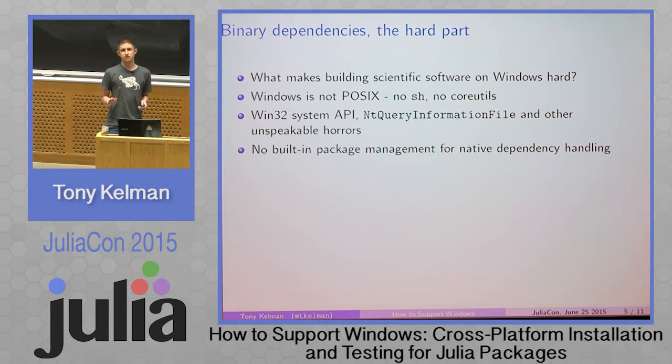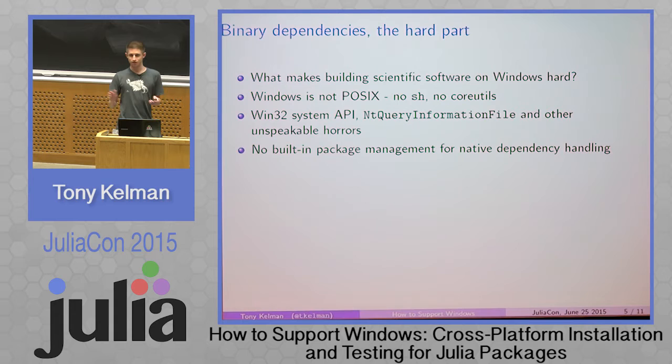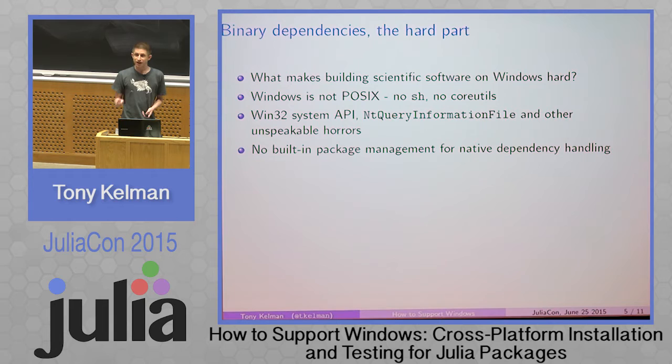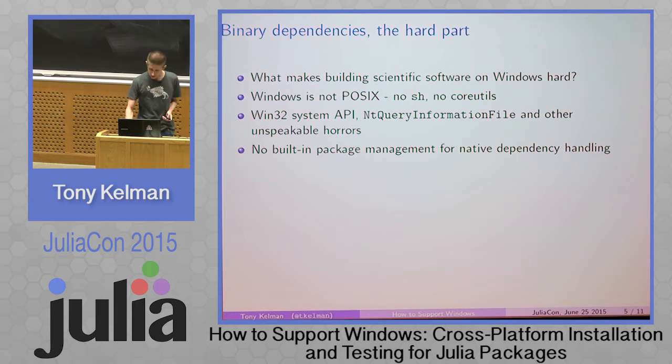Getting on to the hard part of binary dependencies: what makes building scientific software on Windows hard? It's hard. Windows is not POSIX. There's no POSIX shell, no core utilities like sed, grep, or awk — there are ports and POSIX compatibility layers, but they're not there by default; that's not part of the operating system. If you've ever used the Win32 API, it's not fun. Although it does probably have the best API documentation in the world — MSDN has amazingly comprehensive documentation — there are just reams and reams of it telling you all about the terrible design.